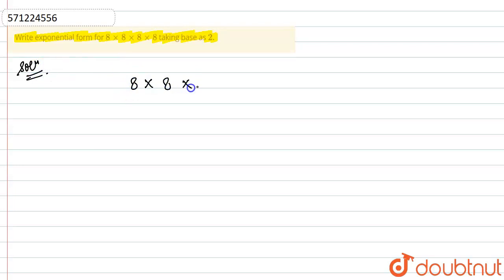So what I can write this as—we are having eight how many times? One, two, three, four times. Okay, so what I can write this as: eight raised to the power four. Okay, since we are having it four times here.